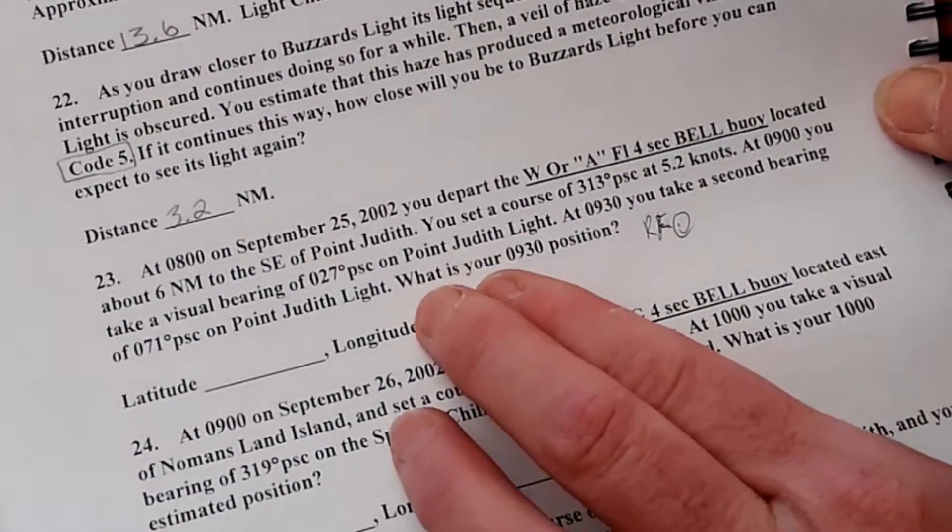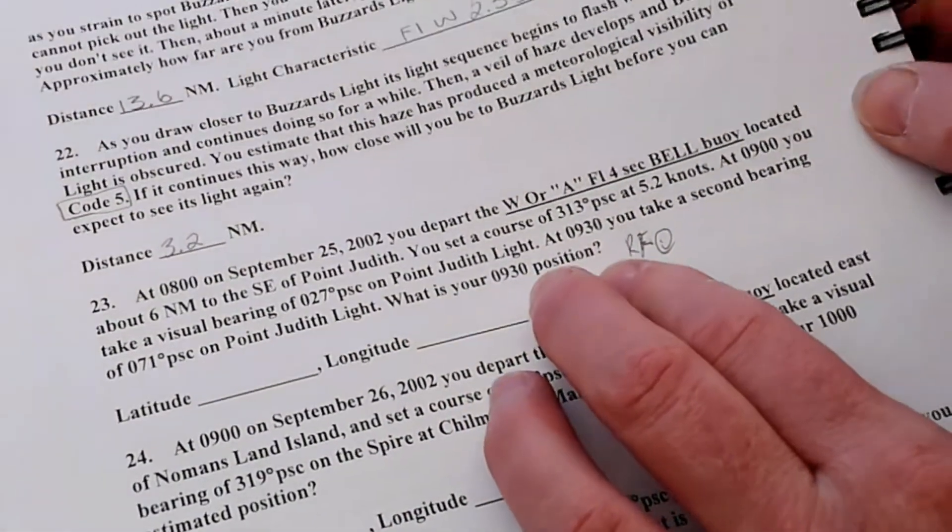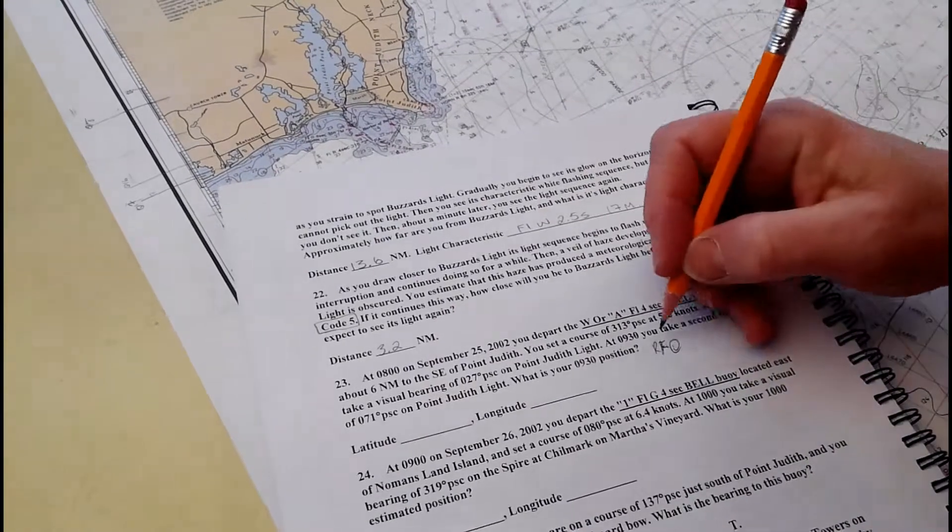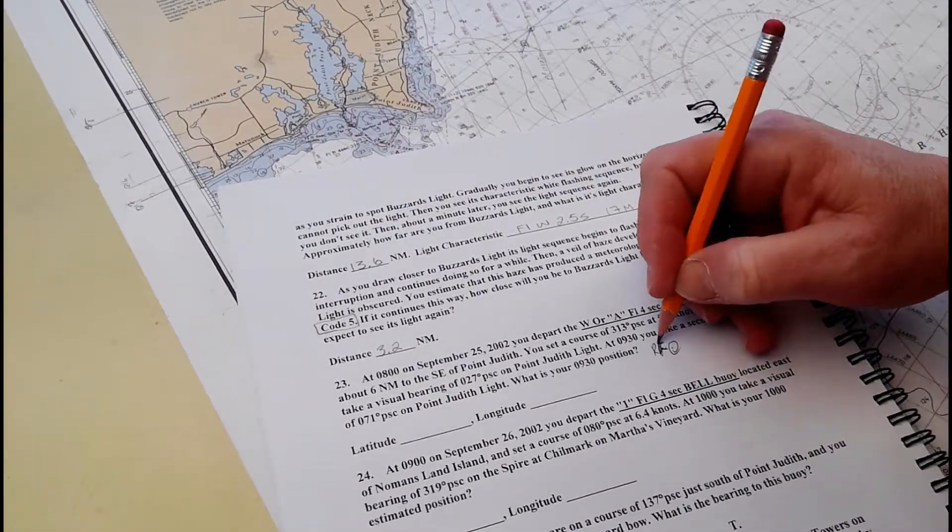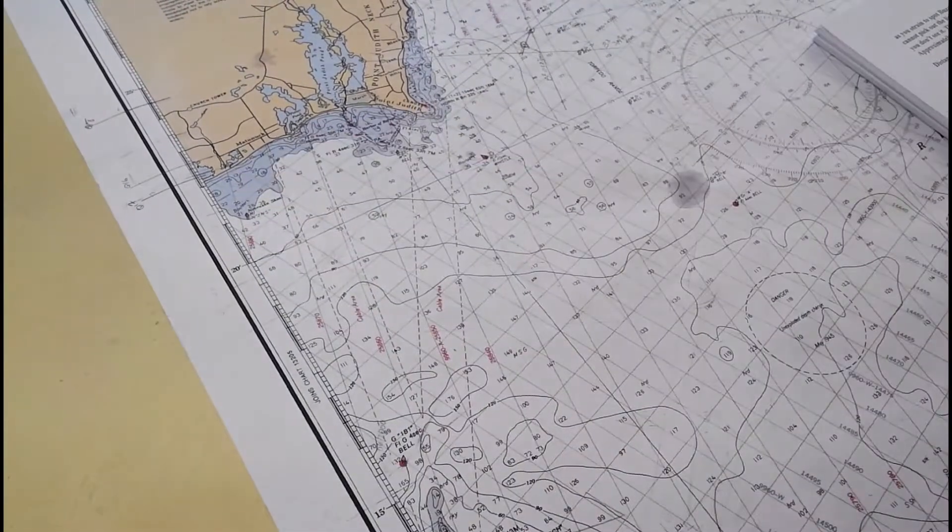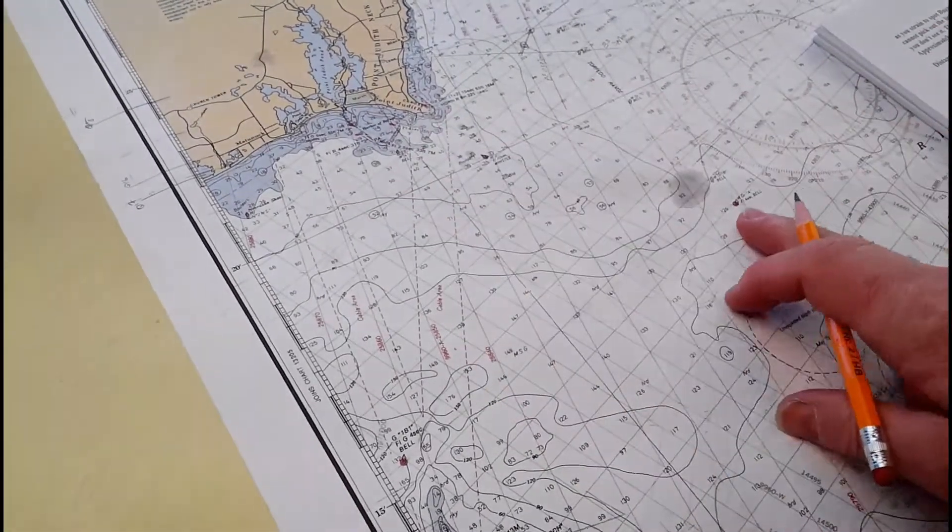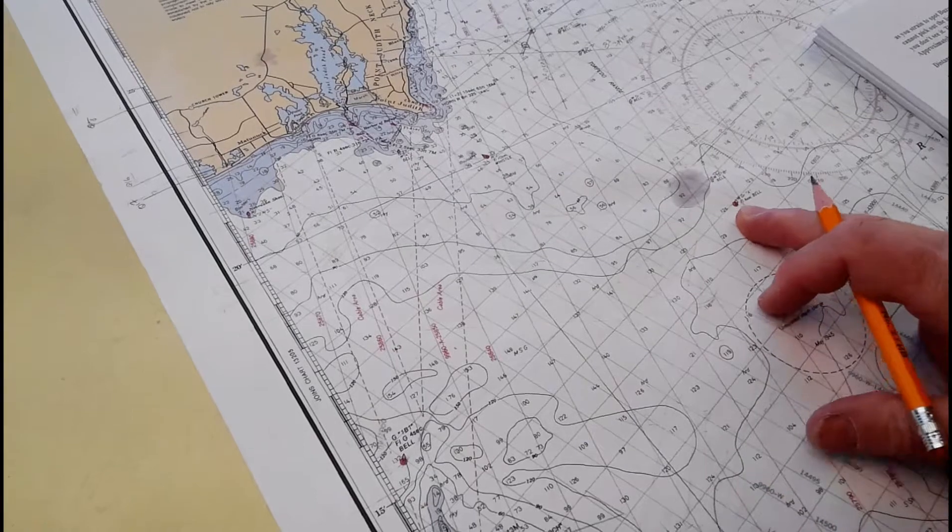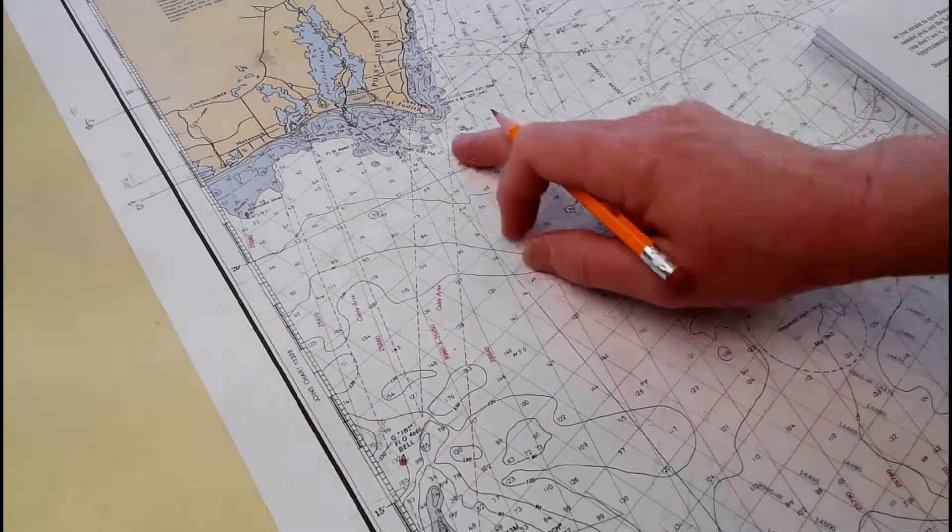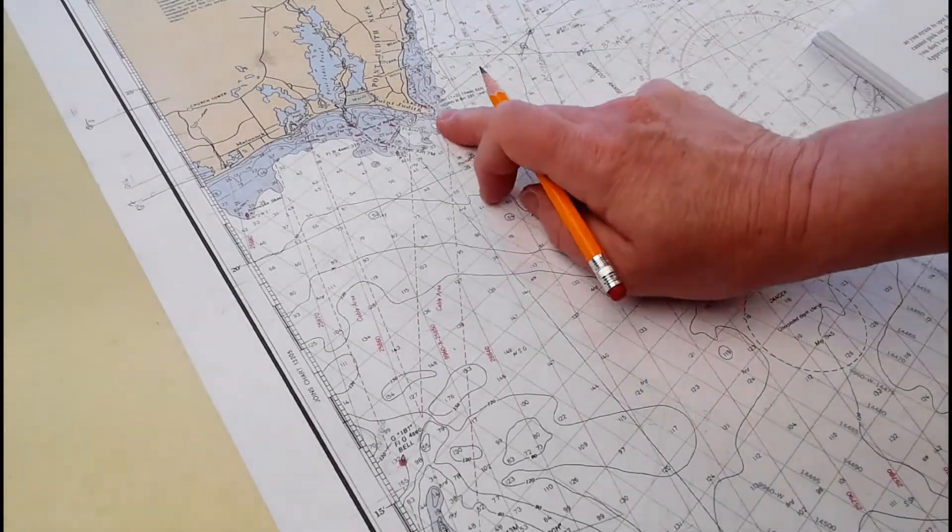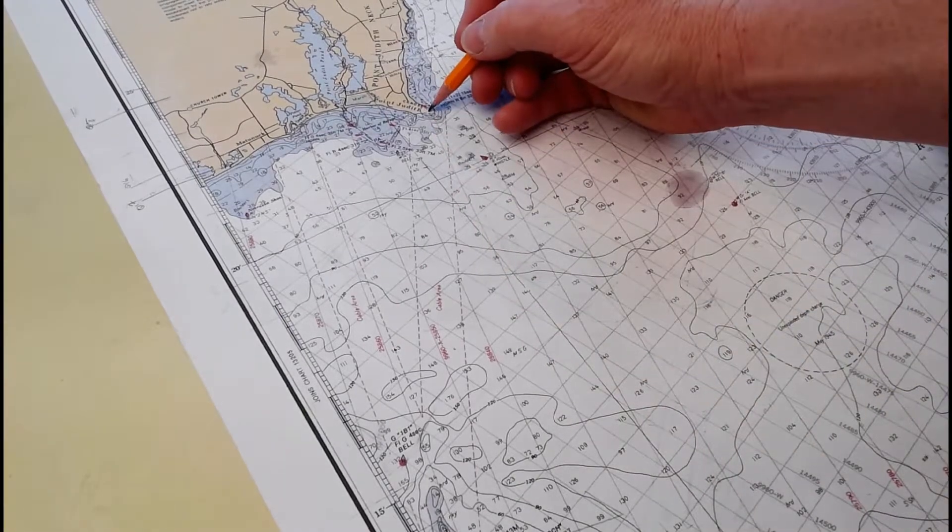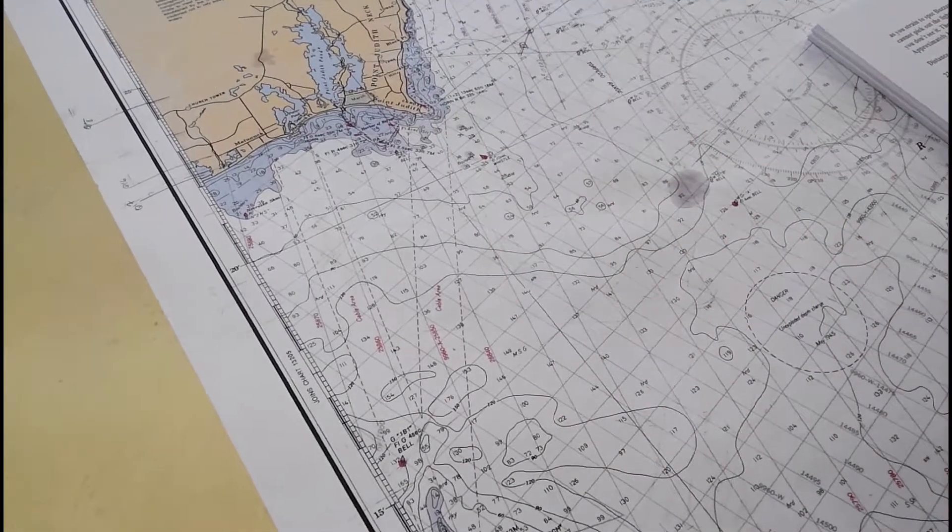The question asks: what's your 0930 position? There's a bunch of little things to do first. We've located where we are generally because we can see this is the WRA flashing four-second bell south of Point Judith Light, which is up here.